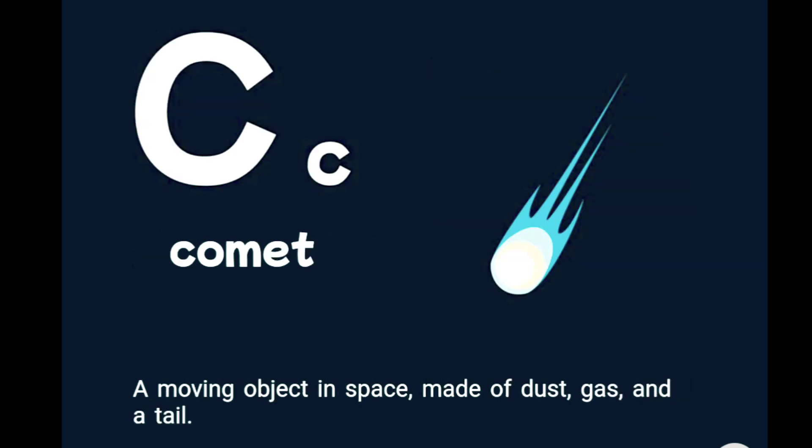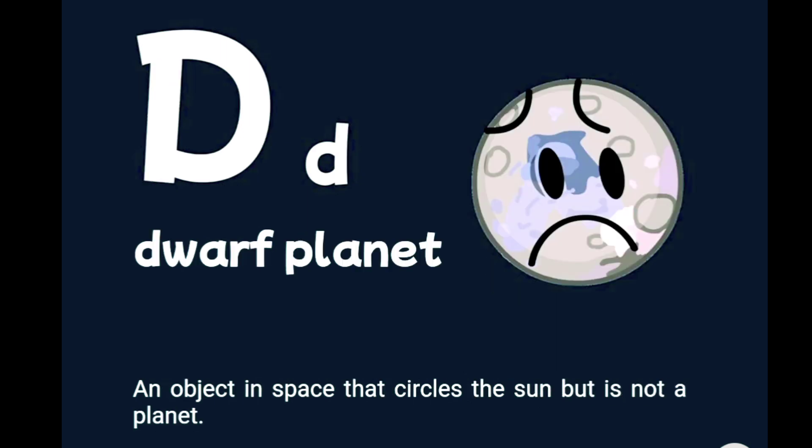C is for comet, a moving object in space made of dust, gas, and a tail. D is for dwarf planet, an object in space that circles the sun, but is not a planet.